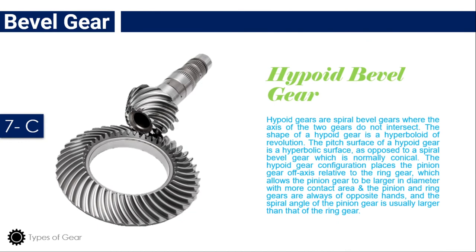Hypoid bevel gear: Hypoid gears are spiral bevel gears where the axes of the two gears do not intersect. The shape of a hypoid gear is a hyperboloid of revolution. The pitch surface of a hypoid gear is a hyperbolic surface, as opposed to a spiral bevel gear which is normally conical. The hypoid gear configuration places the pinion gear axis relative to the ring gear, allowing the pinion gear to be larger in diameter with more contact area. The pinion and ring gears are always of opposite hands, and the spiral angle of the pinion gear is usually larger than that of the ring gear.